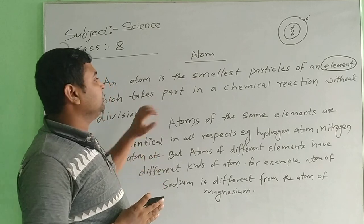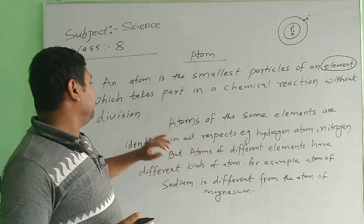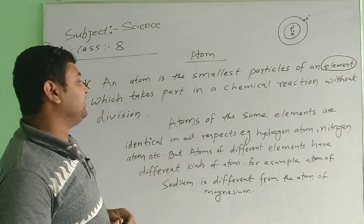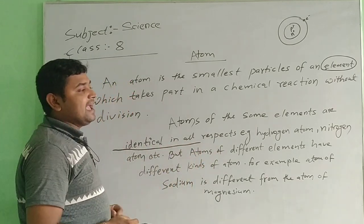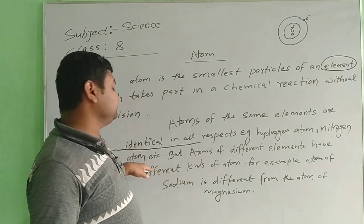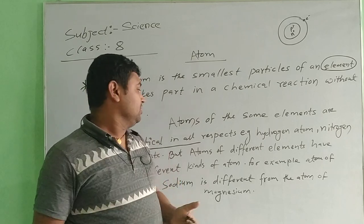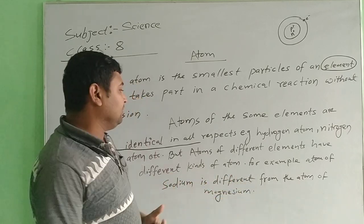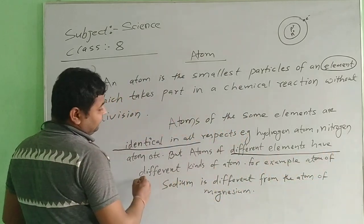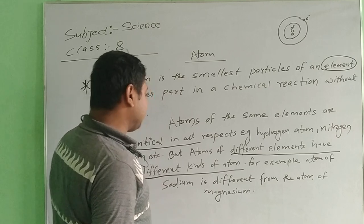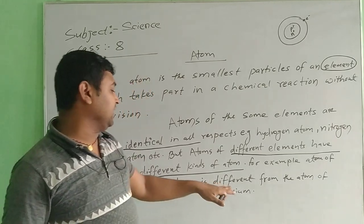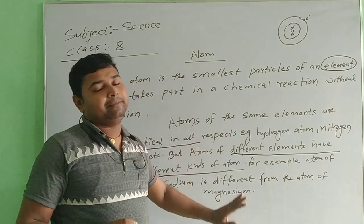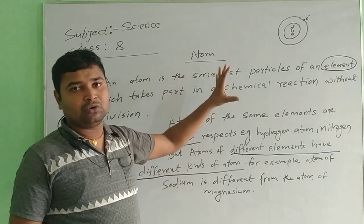At the time of chemical reactions, the atom plays a background role. Atoms of some elements are identical in all aspects — for example, hydrogen atoms and nitrogen atoms are all in identical positions. But atoms of different elements have different kinds of atoms. For example, the atom of sodium is different from the atom of magnesium. I will show you this when I teach you about the structure.